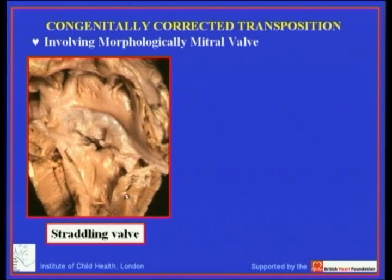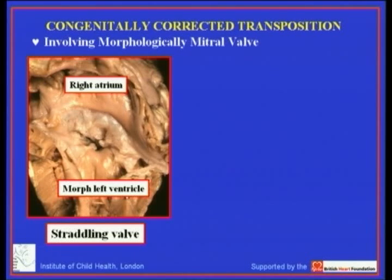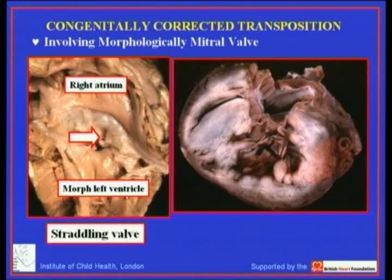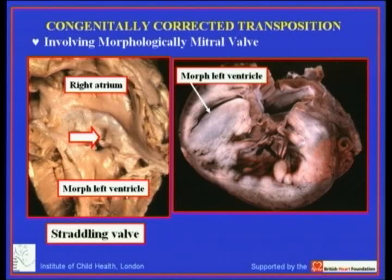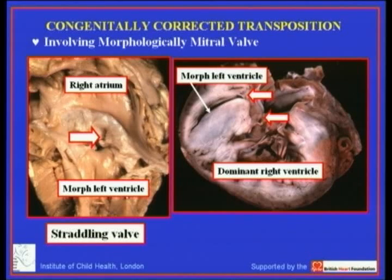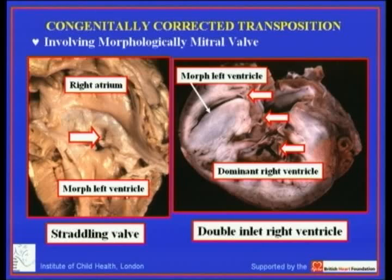The mitral valve can also straddle. Looking at the right side of a heart with congenitally corrected transposition, the right atrium leads to the finely trabeculated morphologically left ventricle on the right. The mitral valve straddles across the crest of the ventricular septum into the left-sided morphologically right ventricle. At the extreme end of the spectrum, the morphologically left ventricle is no more than a slit, and the dominant right ventricle receives the greater part of the straddling mitral and tricuspid valves, giving double inlet right ventricle with left-hand topology.